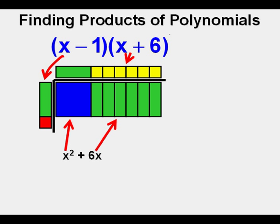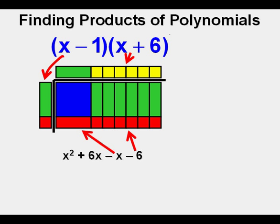Next we find the product of x and 6 which is 6x and place it in the upper right portion of the area with six green rectangles. Next we take the product of x and negative 1 which is negative 1x or negative x and place the rectangular red tile here. And then to completely fill in the rectangle we find the product of negative 1 and 6 which is negative 6 and place it here. Six little square red tiles.